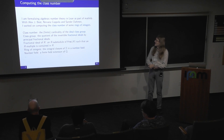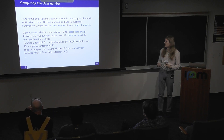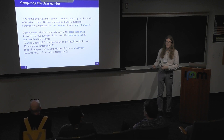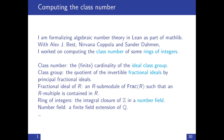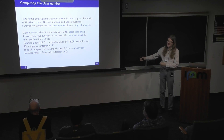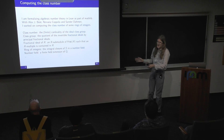The ring of integers of a number field is the integral closure — all elements of the number field that are roots of some monic polynomial with integer coefficients. A number field is a finite field extension of Q, so a field bigger than Q that's finite-dimensional as a Q-vector space. It's a relatively complicated definition, but it's all been well known for over a hundred years — not very exciting for the modern number theorist.